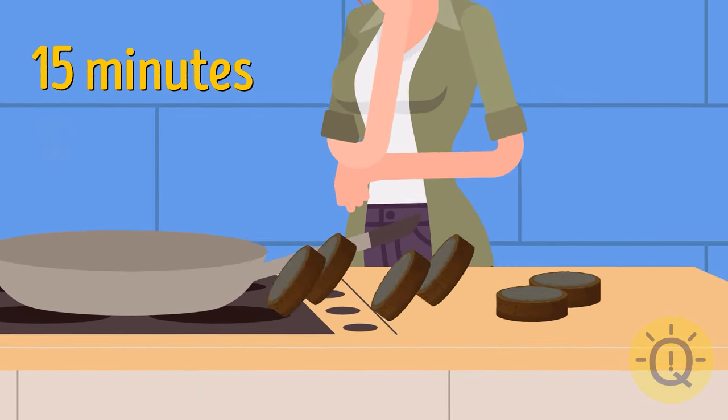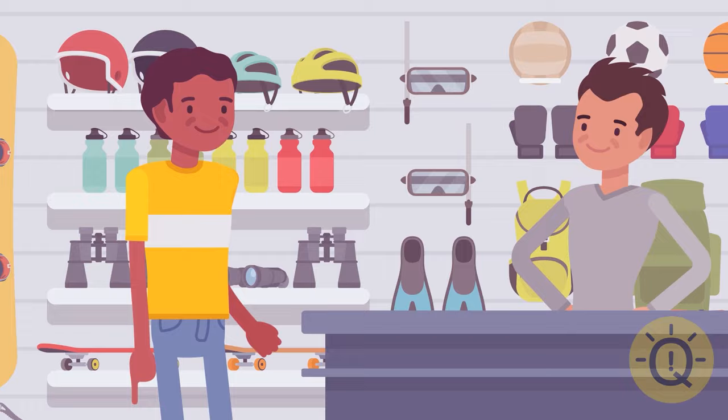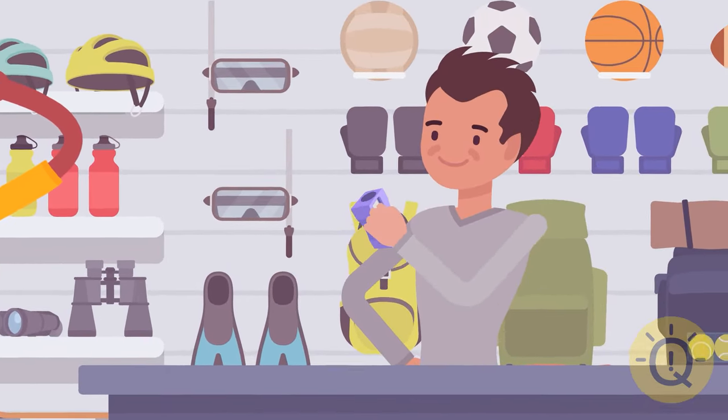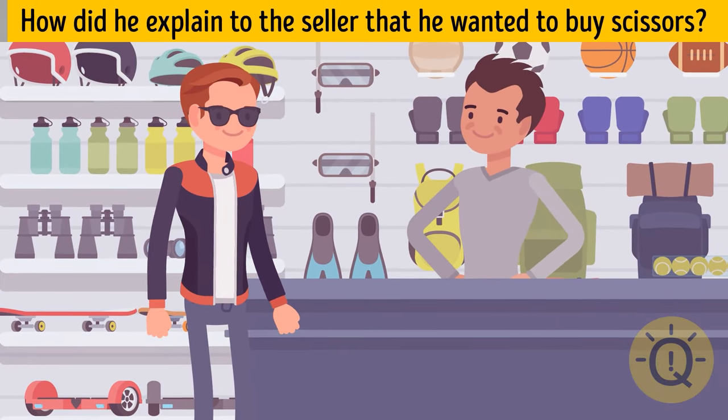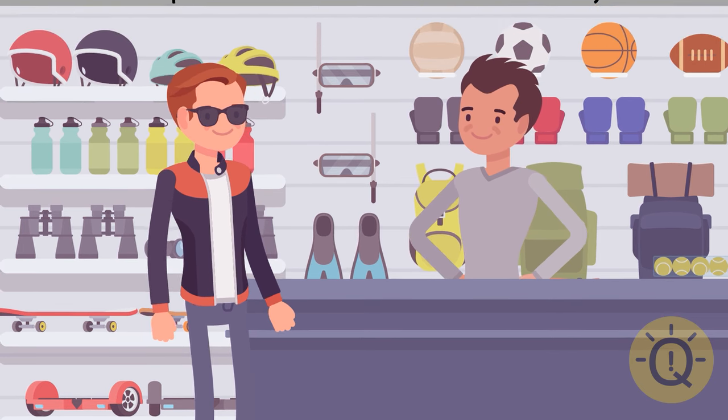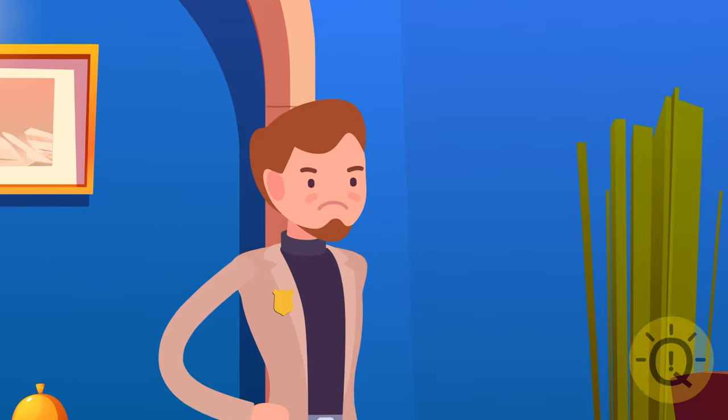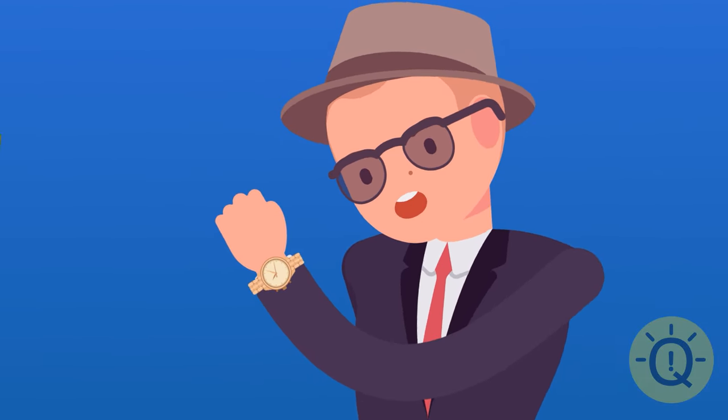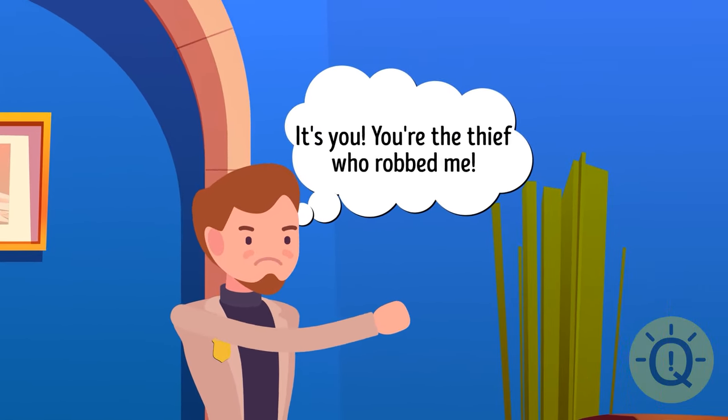The last riddle has a catch. It goes like this: a deaf and mute man entered a store to buy a pencil sharpener. He placed his index finger in his left ear and made a rotational movement near his right ear with the other hand. The seller immediately understood what the man wanted. Sometime later a blind man entered the same store. How did he explain to the seller that he wanted to buy scissors? He just said it aloud. He was blind, not mute. In the morning the detective wakes up and goes downstairs to wait for the suspect. And he indeed comes in at 10:15 a.m. It's a middle-aged man wearing glasses. He looks at his watch and says, oh no, I have to hurry, I'm already 15 minutes late. Gabriel immediately jumps up. It's you! You're the thief who robbed me. How did Gabriel understand that?